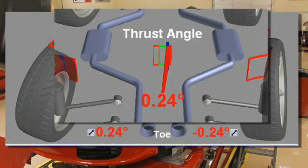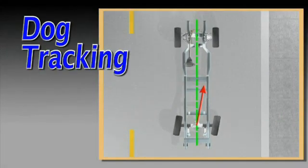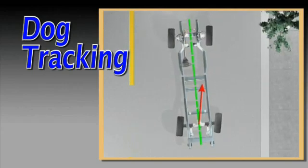In this example, a large positive thrust angle has been detected. Positive thrust, which means the rear wheels are pointed to the right, will cause the vehicle to dog track in this manner.